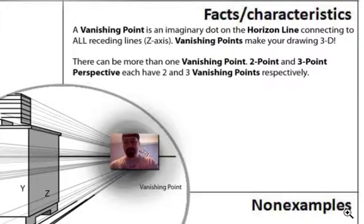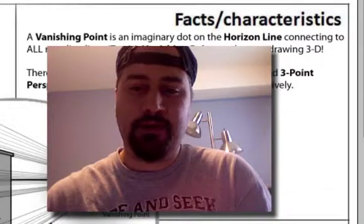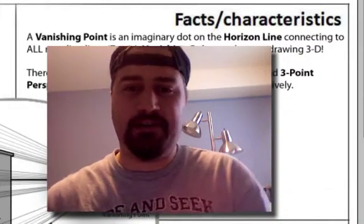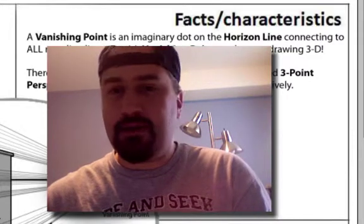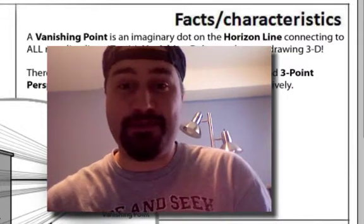Here's the cool thing. There can be more than one vanishing point, and it depends on what you're trying to do in your picture. One point is the most basic. Two point, in my opinion, is the easiest. Three point shows you a lot more cool stuff. And it goes all the way up to four, five, maybe even six point perspective. We'll get up to about two point perspective in design one, and in design two, that's when we get to three point and mess around with some of the other stuff.